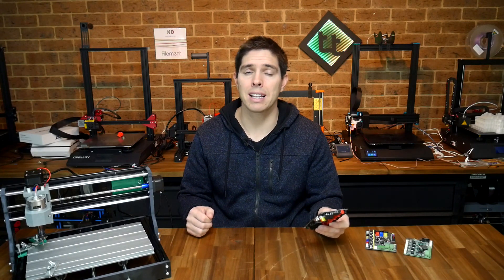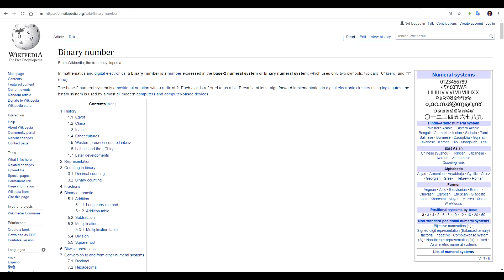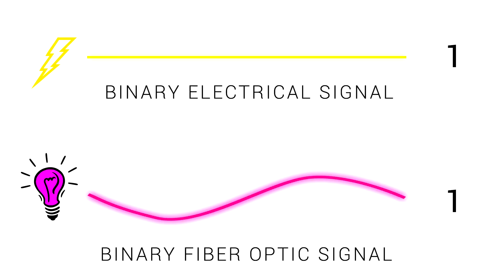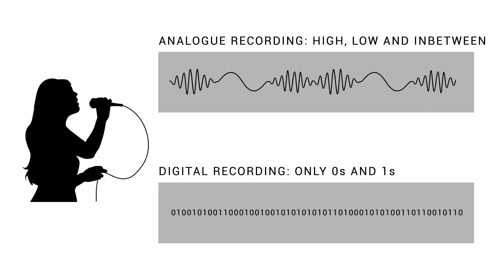Let's start by looking at exactly what a bit is. All computers, except cutting-edge quantum computers, run on binary. Binary means two states — on or off, true or false, high or low, zero or one. This makes sense because electricity can either be on or off, or a fibre optic cable can be lit or not lit. This is what digital is — everything converted to two possible states, as opposed to analog, which is a spectrum with graduations in between.